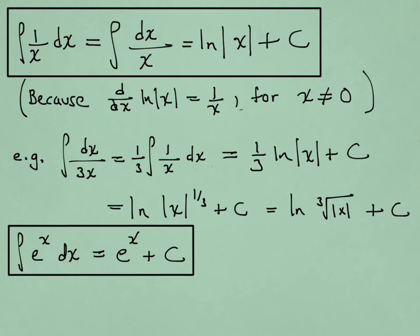Another common integral form that we'll need to know is the integral of e to the x. And that's e to the x. Why is that the case? Because if I differentiate e to the x, it's its own antiderivative.